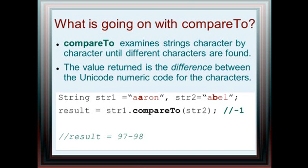So with compareTo, compareTo examines strings character by character until different characters are found. The value returned is the difference between the Unicode numeric code for the characters. So let's see an example. String1 has aaron and string2 has able.